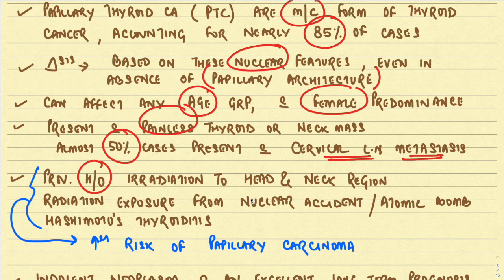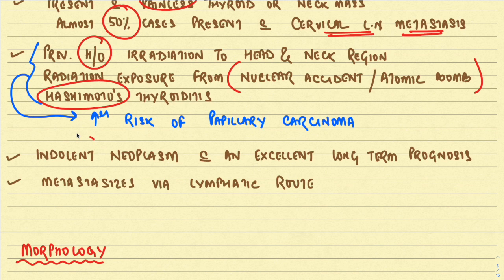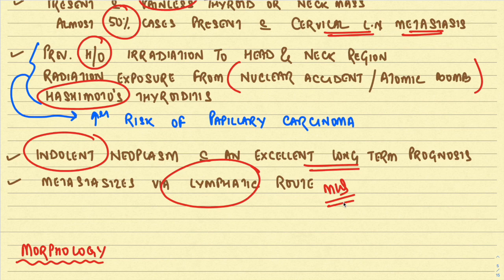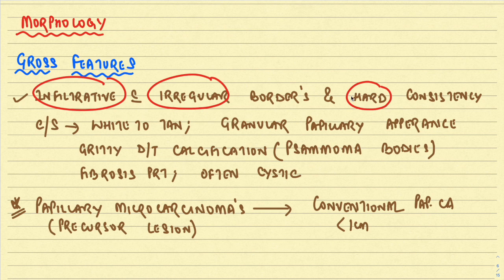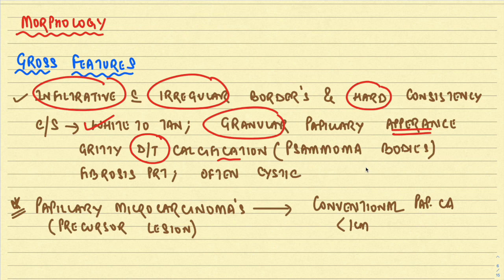Risk factors include previous radiation to the head and neck region, radiation exposure from nuclear accidents or atomic bombs, and Hashimoto's thyroiditis. Papillary carcinoma is an indolent or slow-growing tumor with an excellent long-term prognosis. It mostly metastasizes via the lymphatic route, whereas follicular carcinomas metastasize via the hematogenous or vascular route. Grossly, they are infiltrative in nature with irregular borders and hard consistency. On cut section, they are white to tan in color with granular papillary appearance, gritty due to psammoma body calcification, and often cystic with extensive fibrosis.